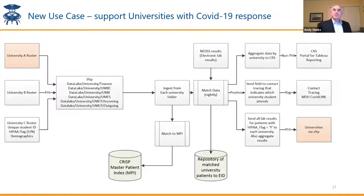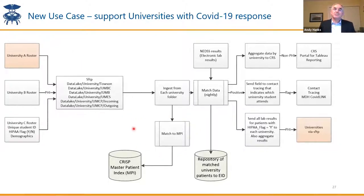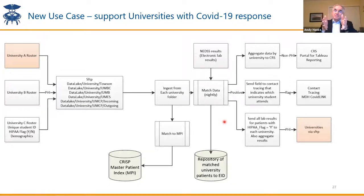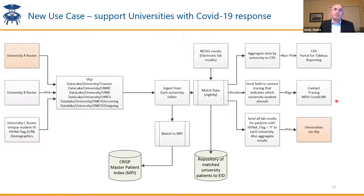Here's an interesting use case: supporting universities. On the left, they send us a roster. Each night we match it to our master patient index and to the NEDS results or lab results that came in that night. At the moment we're pushing aggregate information showing for the last 21 days — on each day — who tested positive and who tested negative, so they can see what's happening in that student population. Once we get HIPAA waivers in place, we'll be able to push back actual lab tests, and then obviously push through to COVID Link — for example, for students at UMBC — to help coordinate the response.